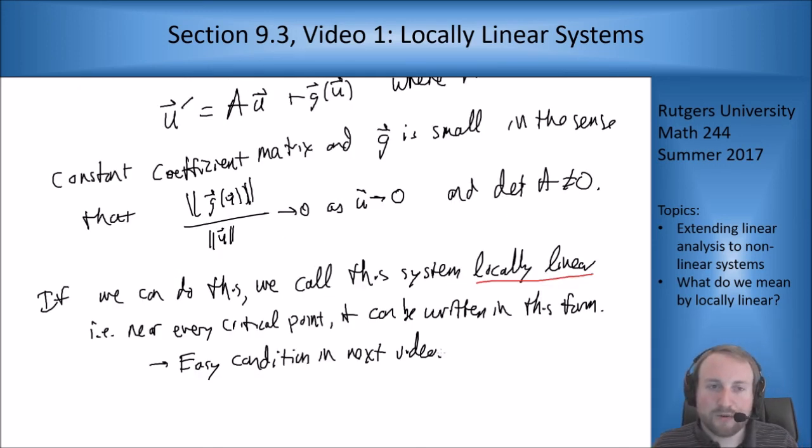All right so that's it for this one. I just wanted to go through sort of what the definition of local linear was and how we're going to try to use it to analyze nonlinear systems because if we can do this we want to say that if we can solve the constant coefficient system then we get an idea of what the nonlinear one looks like near that point and that's what we're going to talk about more in the next video. So thanks a lot for watching and I'll see you in the next one.